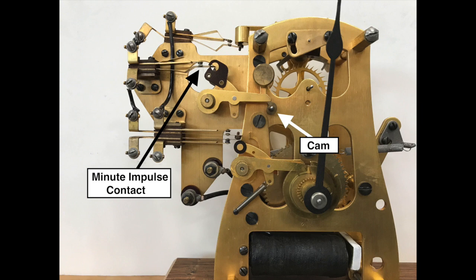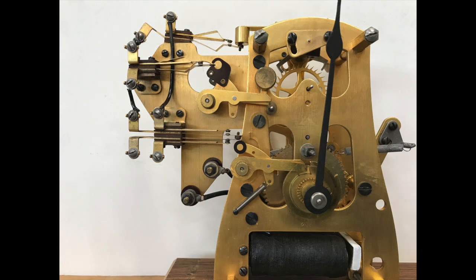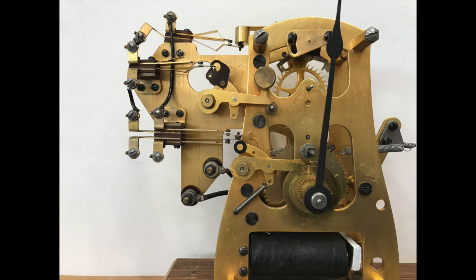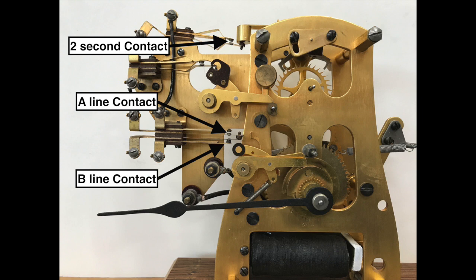Now how it looks on the real movement. Every minute the cam revolves dropping the lever closing the contact. This impulse keeps the mainspring wound and is the contact that advances the slaves each minute. The three correction contacts go through their cycle of opening and closing every hour. But this only affects slaves if they are either fast or slow.